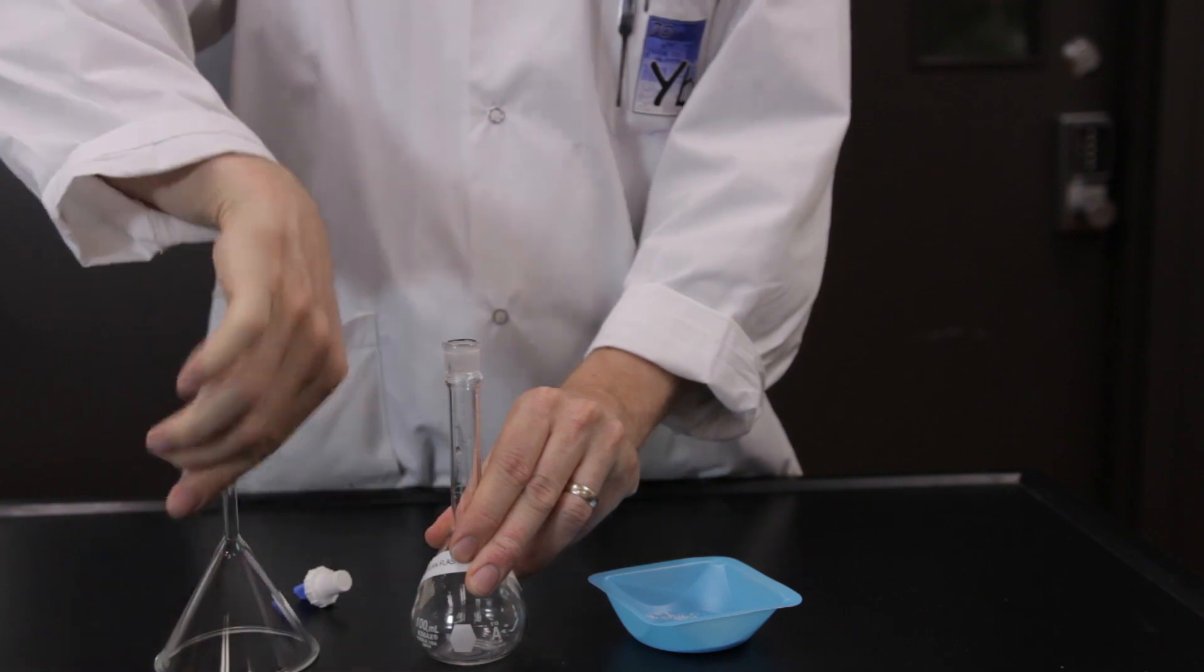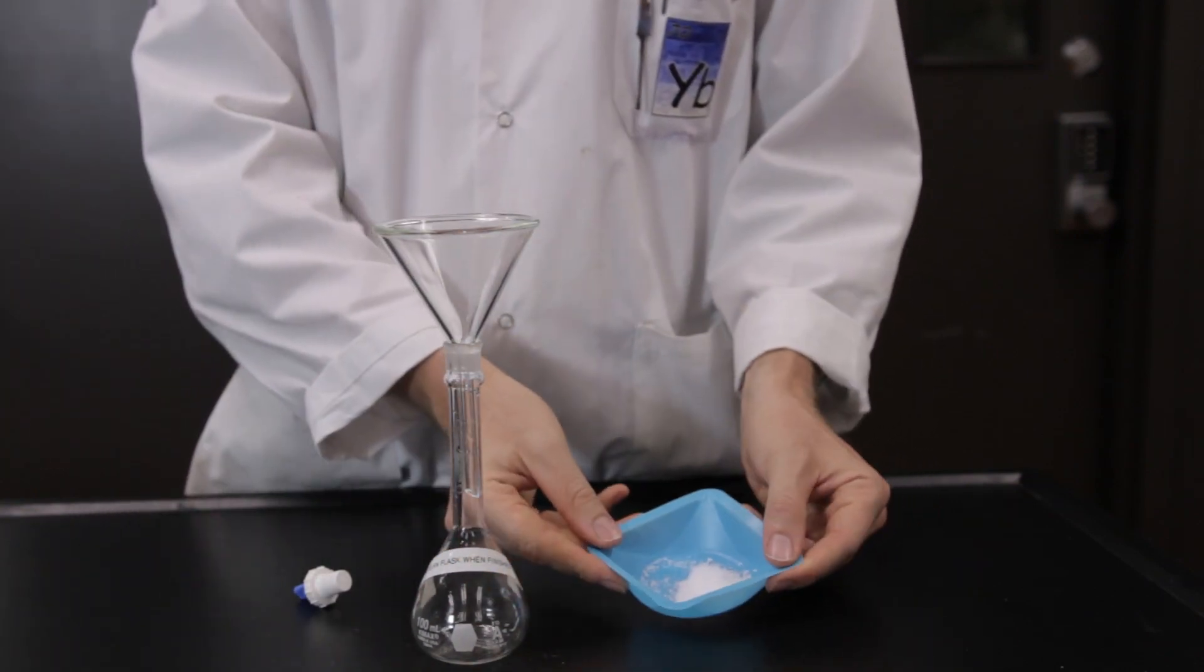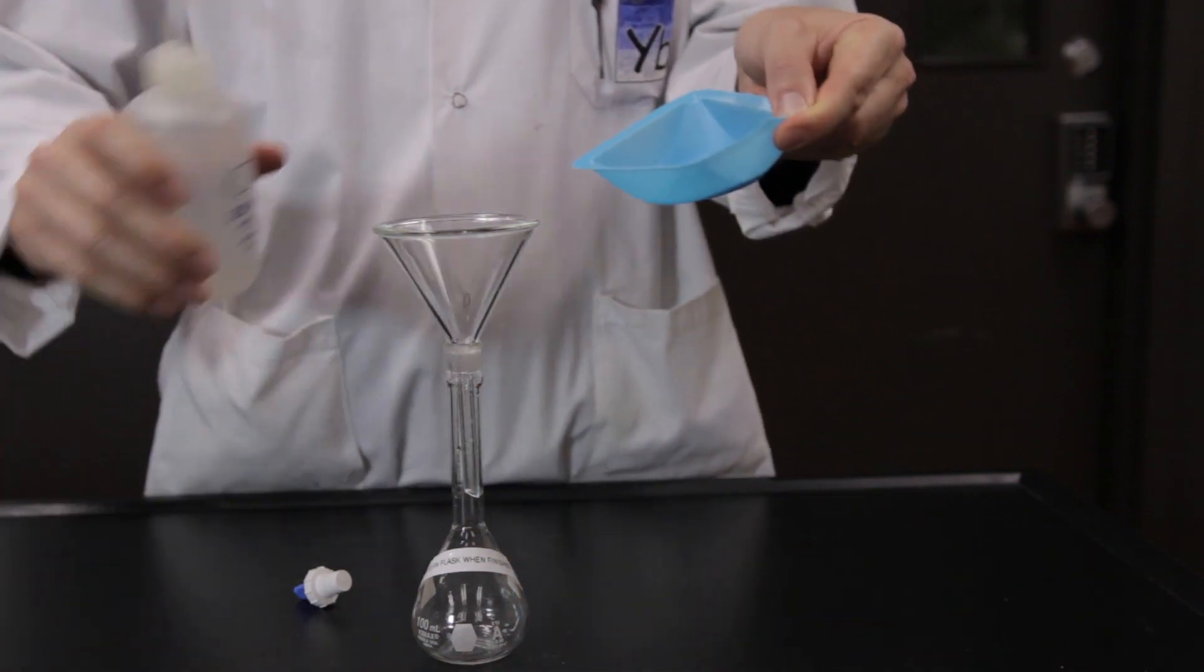Transfer the solid calcium chloride dihydrate to a 100 milliliter volumetric flask and add about 50 milliliters of distilled water.